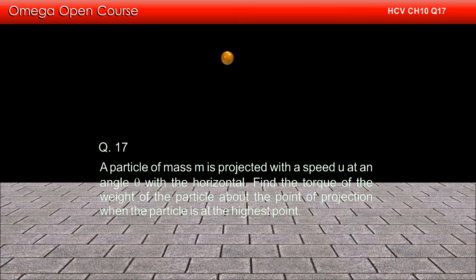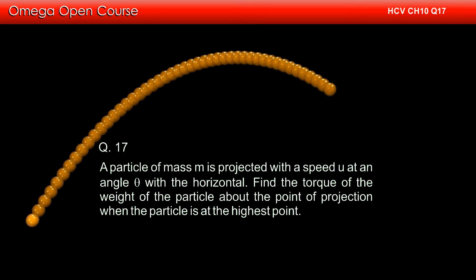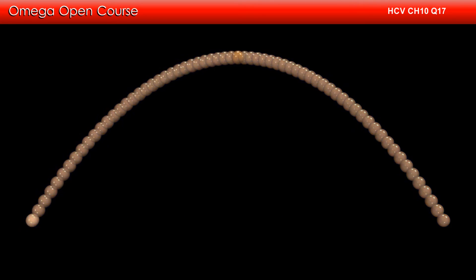A particle of mass m is projected with speed u at an angle theta with the horizontal. Find the torque of the weight of the particle about the point of projection when the particle is at the highest point.